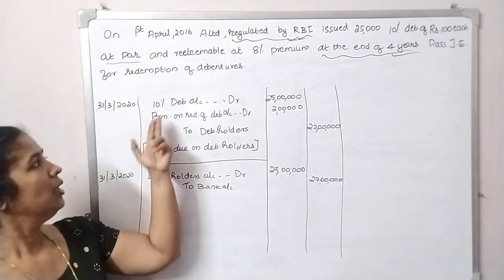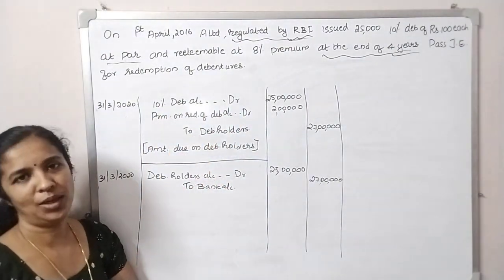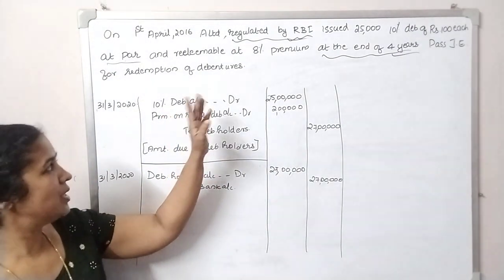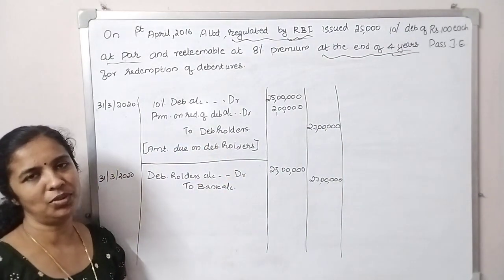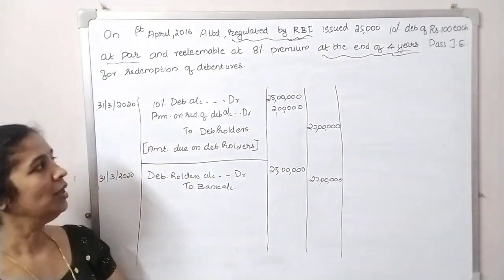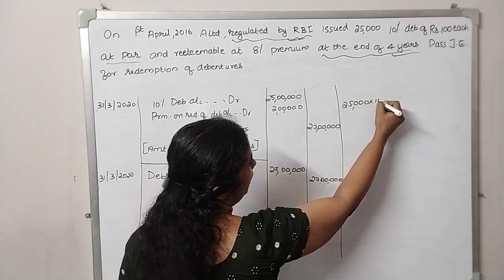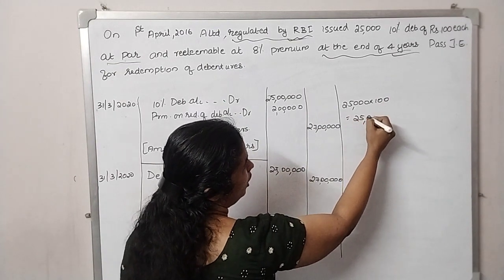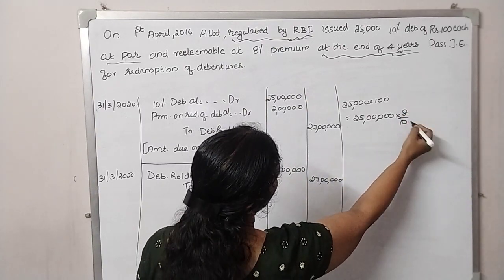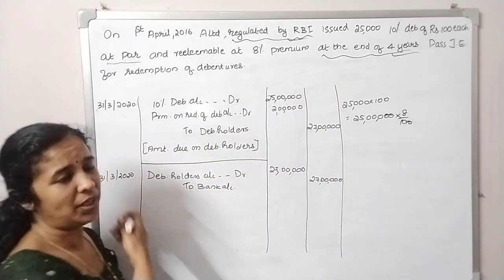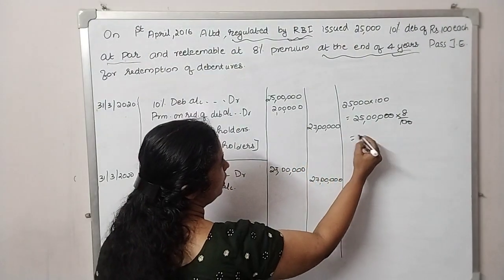We already have one discount. We have to pay 8% premium to debenture holders. 25,000 debentures of Rs. 100, that is 25 lakhs. Now, what is the premium on the redemption? That is 8 percentage. So 25 lakhs multiplied by 8% is 2 lakhs.